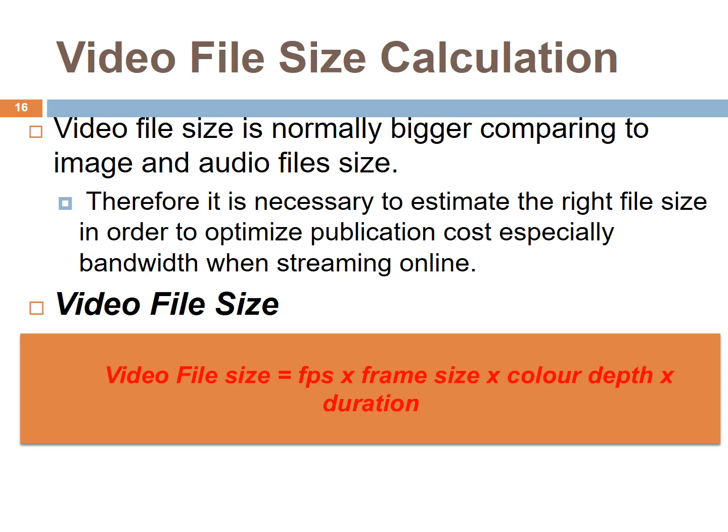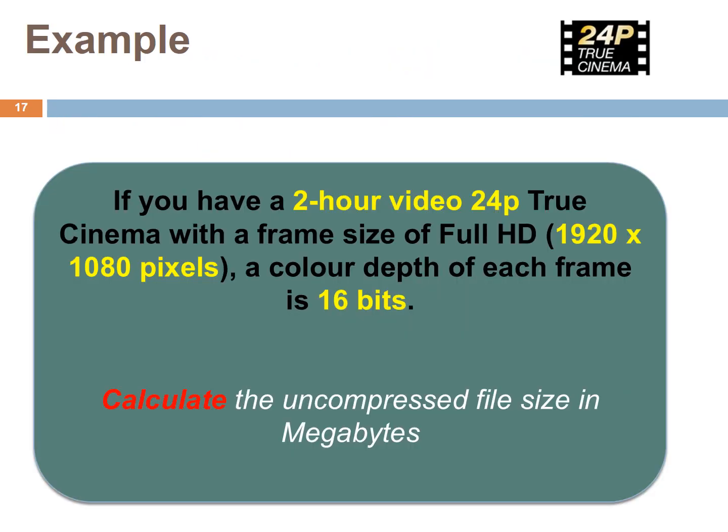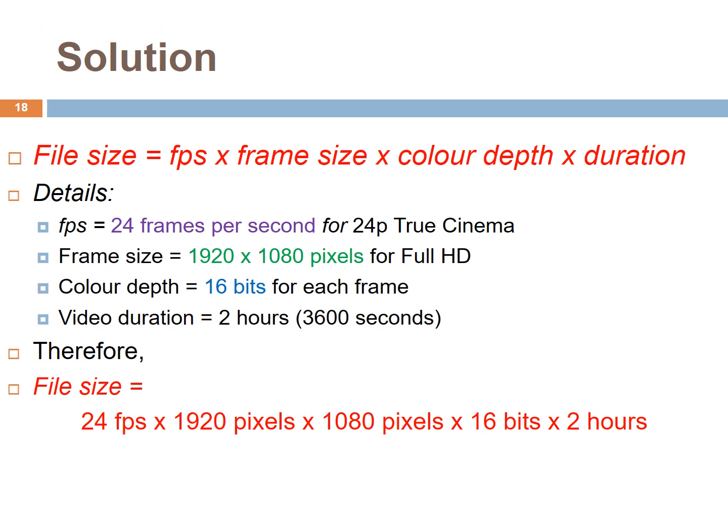You can calculate the video file size using frame rate, frame size, color depth, and duration of the video. For example, if you have a 2-hour video at 24p true cinema with a frame size of full HD 1920 x 1080 pixels and a color depth of 16 bits per frame, calculate the uncompressed video size in megabytes. Given that the frame rate is 24 frames per second, frame size is 1920 x 1080 pixels, color depth is 16 bits, and the duration is 2 hours, which is 3600 seconds — multiply all these values to get the file size.